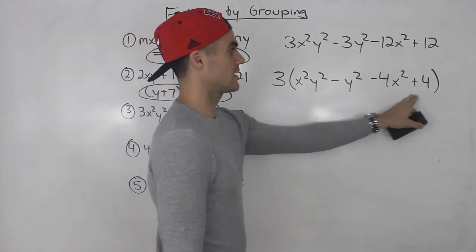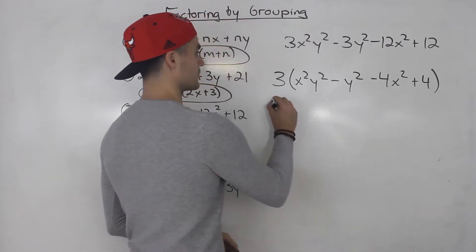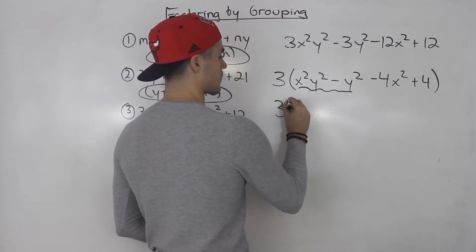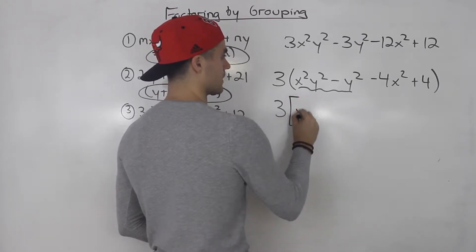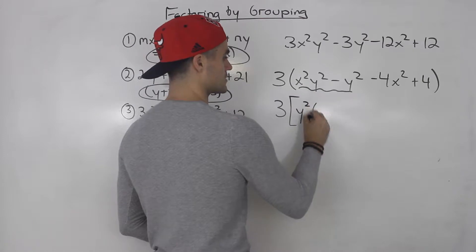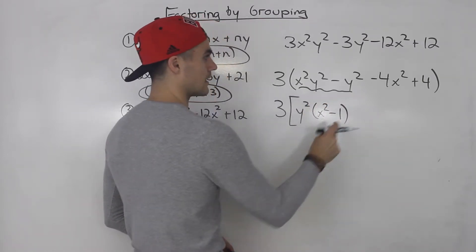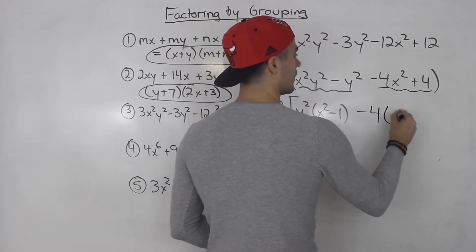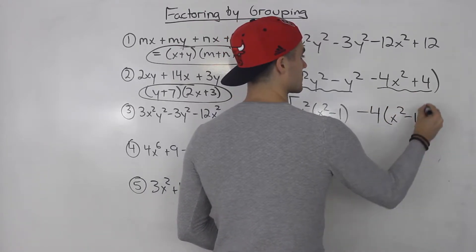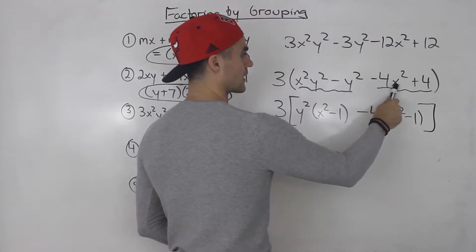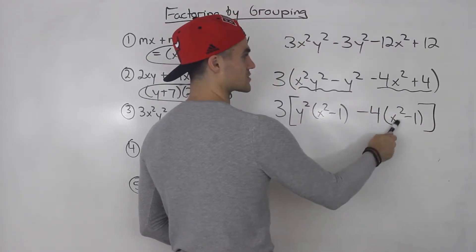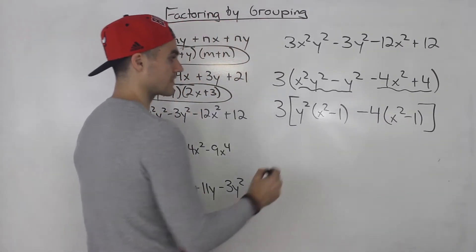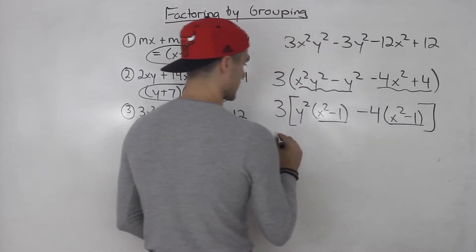After taking out the 3, we can factor by grouping. From the first two terms, we could take out a y squared, and we're left with x squared minus 1. Then from the last two terms, we could take out a minus 4, and we'd be left with x squared minus 1 as well — since negative 4x squared divided by negative 4 is x squared, and positive 4 divided by negative 4 is negative 1. Then from here, we could take out an x squared minus 1.